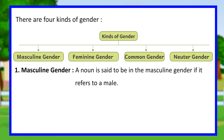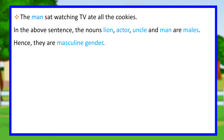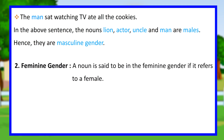Masculine gender: a noun is said to be in the masculine gender if it refers to a male. For example: they have brought a new lion to the zoo; the crowd rushed to greet the actor; I received a letter from my uncle yesterday; the man sat watching TV and ate all the cookies. In the above sentences, the nouns lion, actor, uncle, and man are males, hence they are masculine gender.